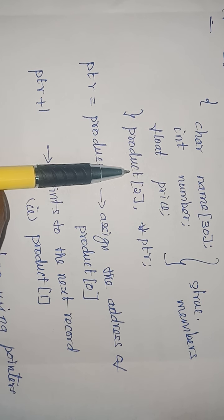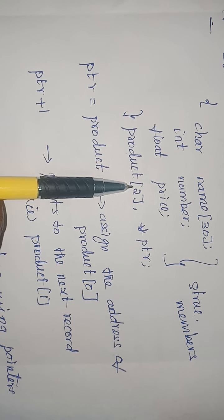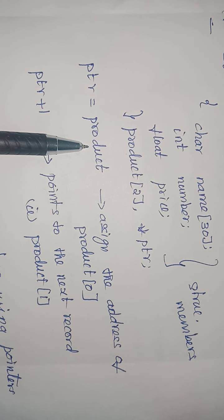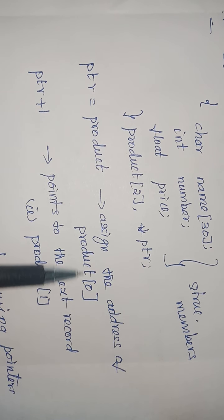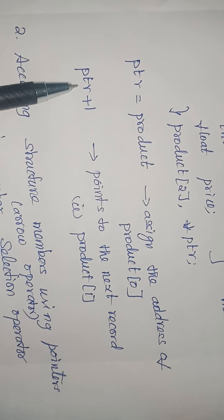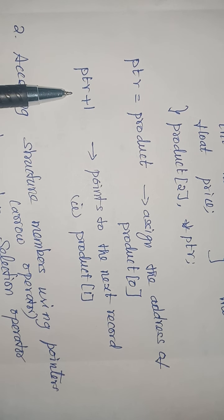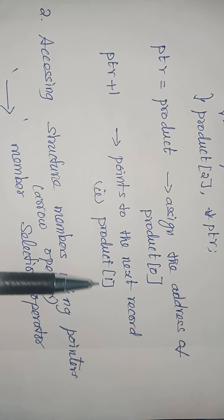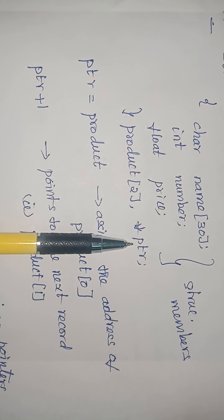To store the address of this structure variable in the pointer, we write PTR equal to product. Since it is an array, the name of an array itself contains the base address. So PTR equal to product assigns the address of product[0]. If I write PTR plus 1, the pointer increments to the next record - that is product[1] - not just the next address. This is how to declare a pointer variable to a structure and collect the structure's address.